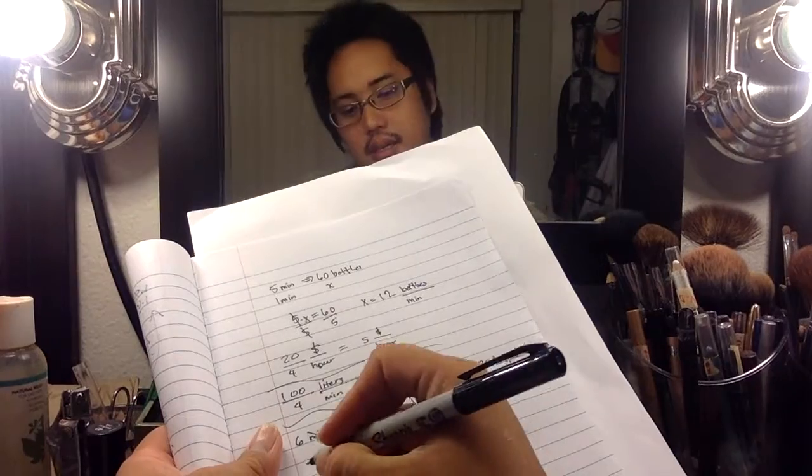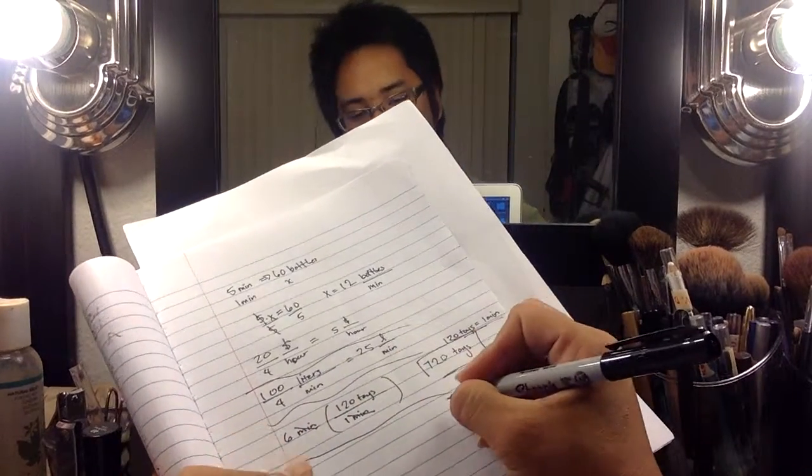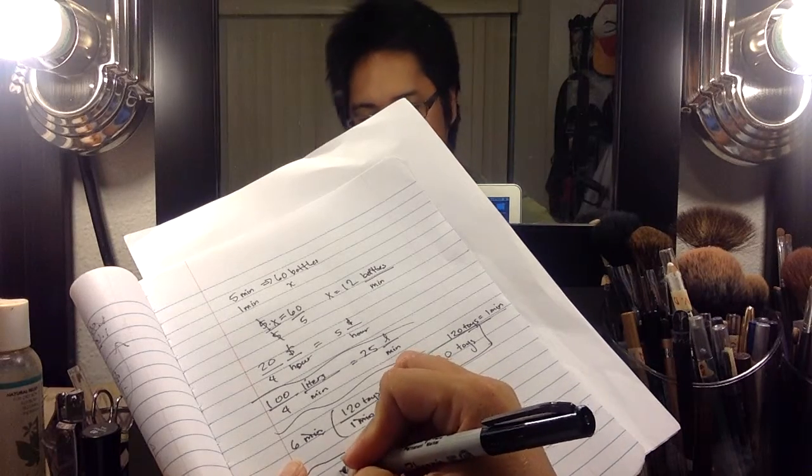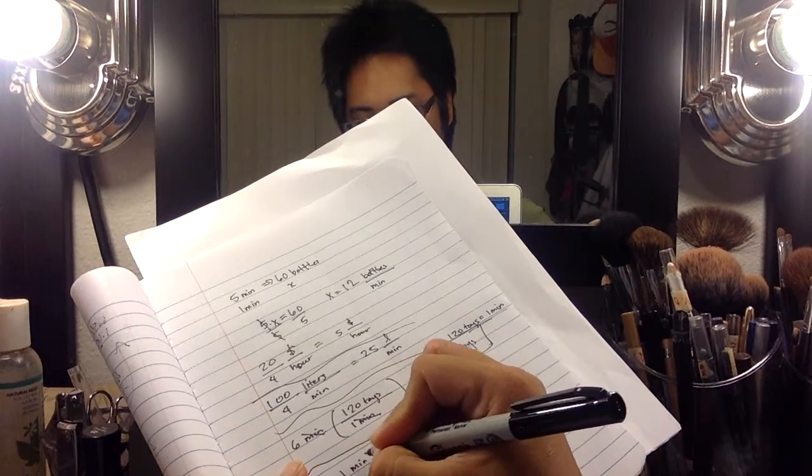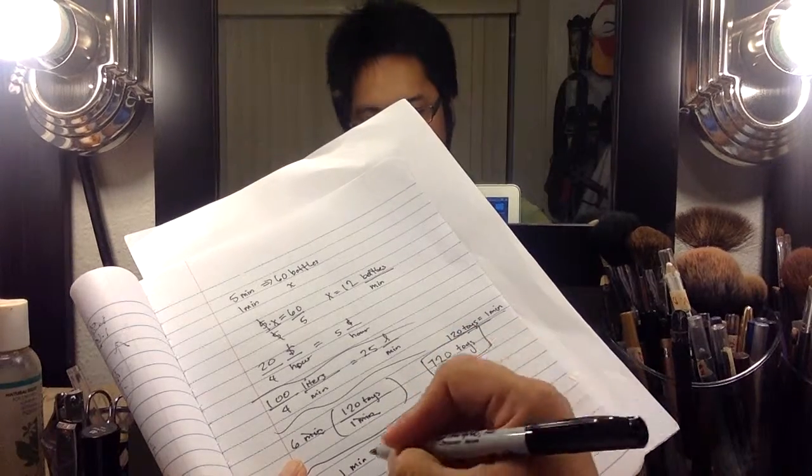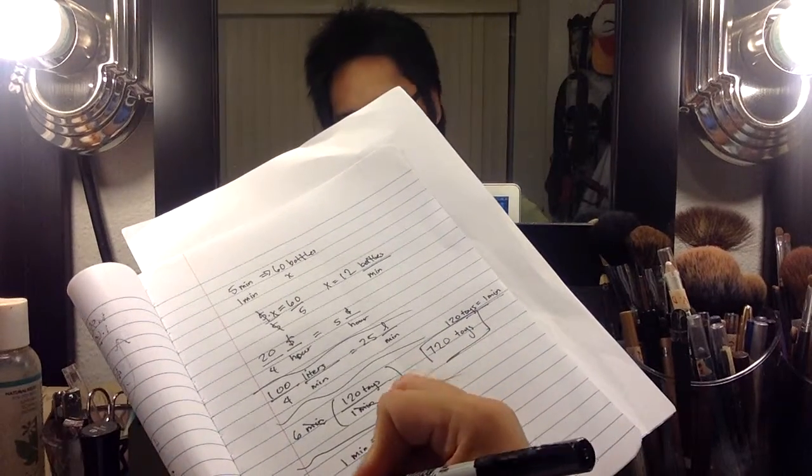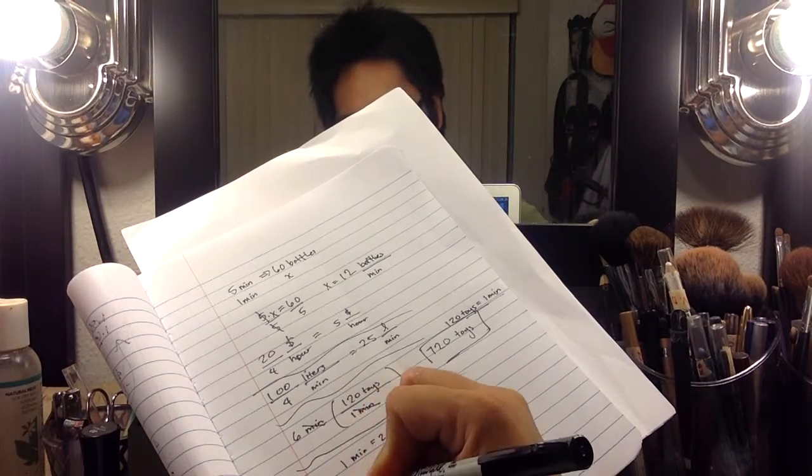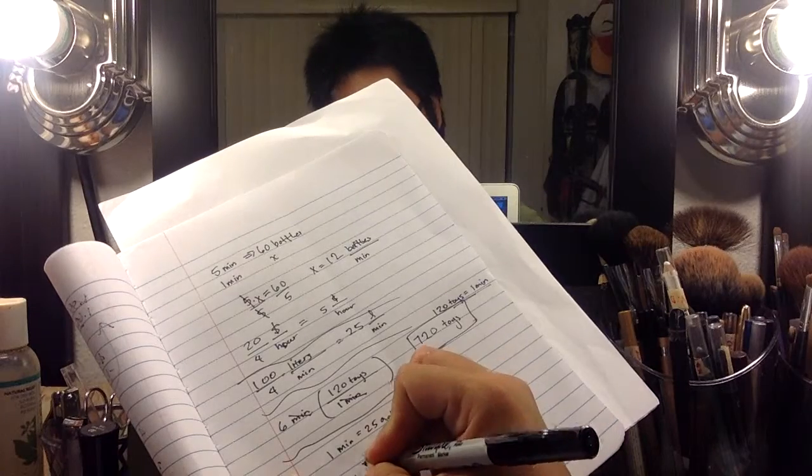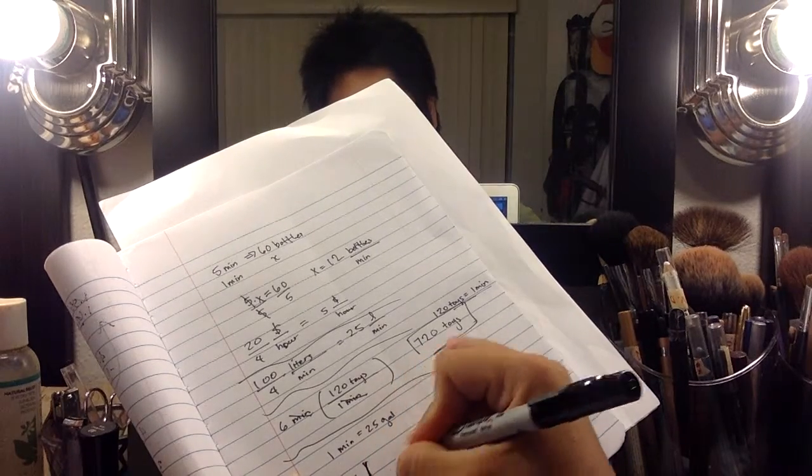this way. We know a conversion here. They gave us the fact that one minute equals 25 gallons in this particular problem. So if I'm asking for a hundred gallons and I want to convert that to how many minutes it would take me, then I'll multiply by this rate that I